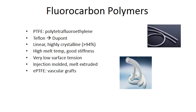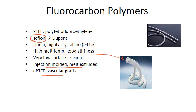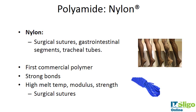PTFE are the fluorocarbon polymers, which came up earlier in hernia repair. PTFE is linear and highly crystalline, giving it good mechanical properties, high melt temperature, stiffness, and very low surface tension. The low surface tension makes it excellent for blood-contacting devices. It is used in vascular grafts. The trade name Teflon — used to coat non-stick pans — is the same material used in vascular grafts to stop blood sticking and prevent thrombus formation. PTFE can be injection molded and melt extruded as it is a thermoplastic polymer.